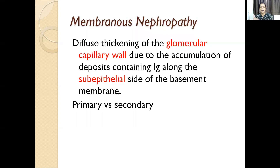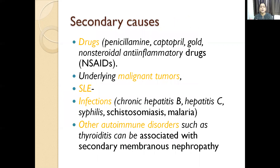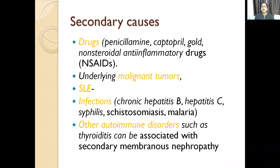Secondary membranous nephropathy results from drugs — when a person has rheumatoid arthritis treated with NSAIDs, they may also take penicillamine and gold, which are secondary causes. Underlying malignant tumors, systemic lupus erythematosus (lupus nephritis is one class of membranous nephropathy), infections like chronic hepatitis B, hepatitis C, syphilis, schistosomiasis, and malaria, and other autoimmune diseases such as thyroiditis are also associated.